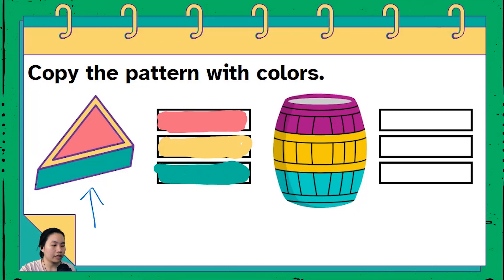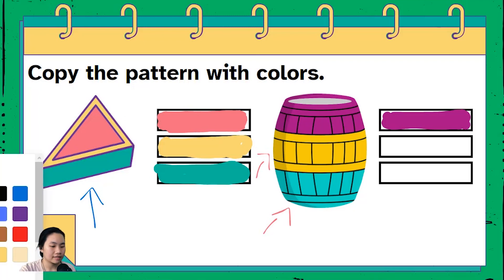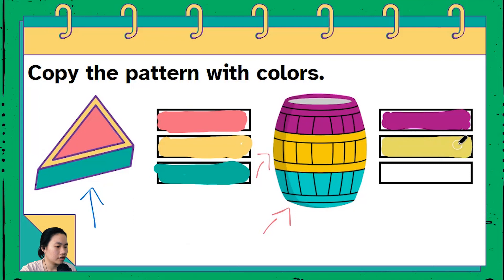Green over here. All right let's move on to our second object which is this barrel over here. What's the first color that you see for this barrel? It is purple. Okay. Purple. What's the second color over here? It is yellow. Yellow.